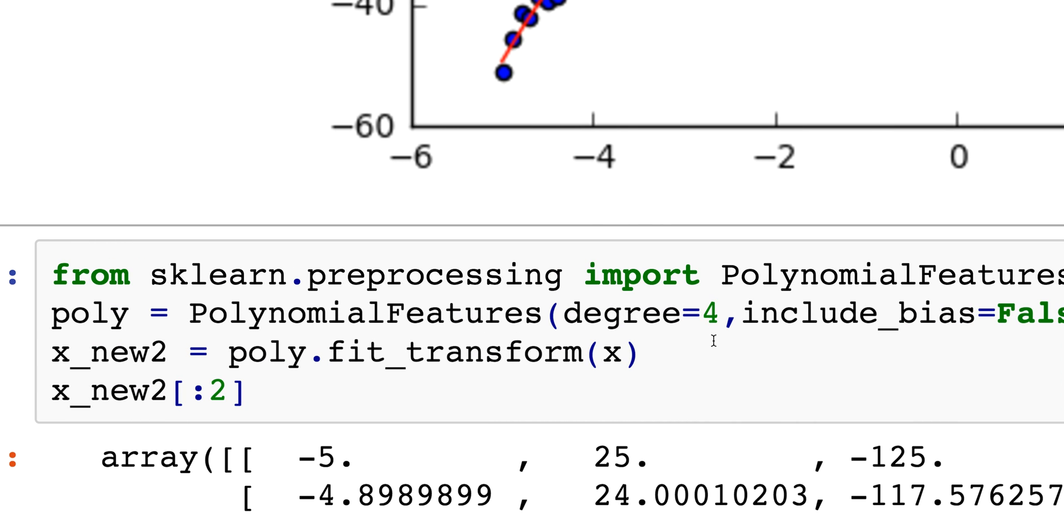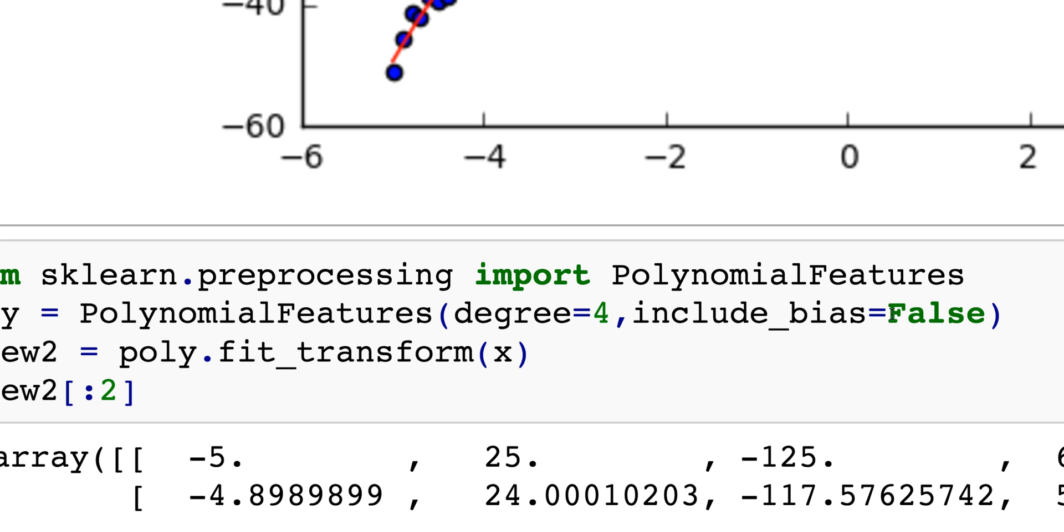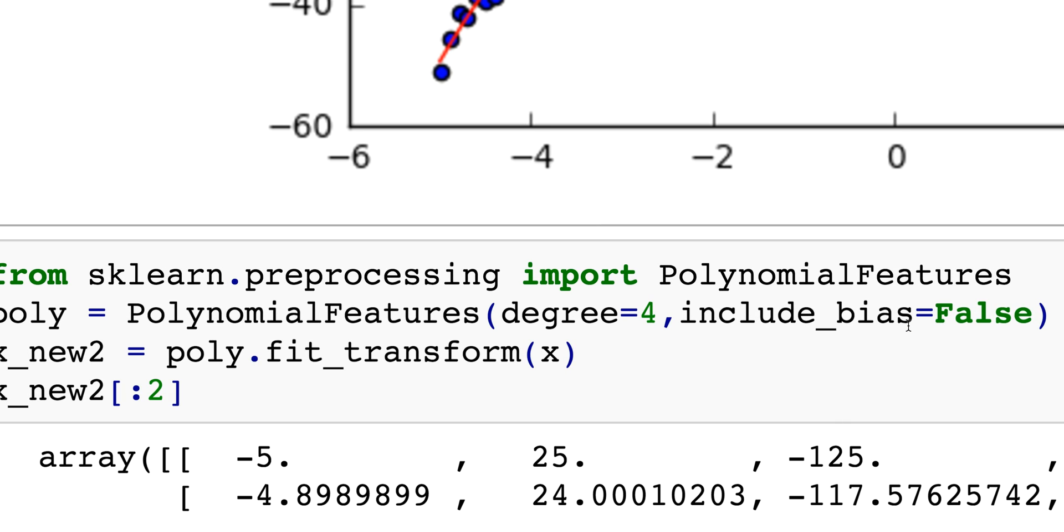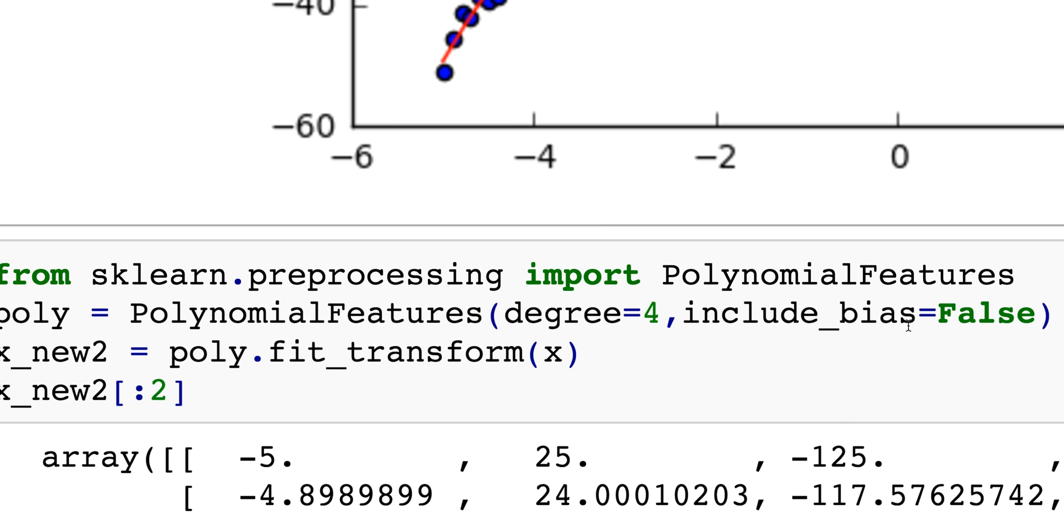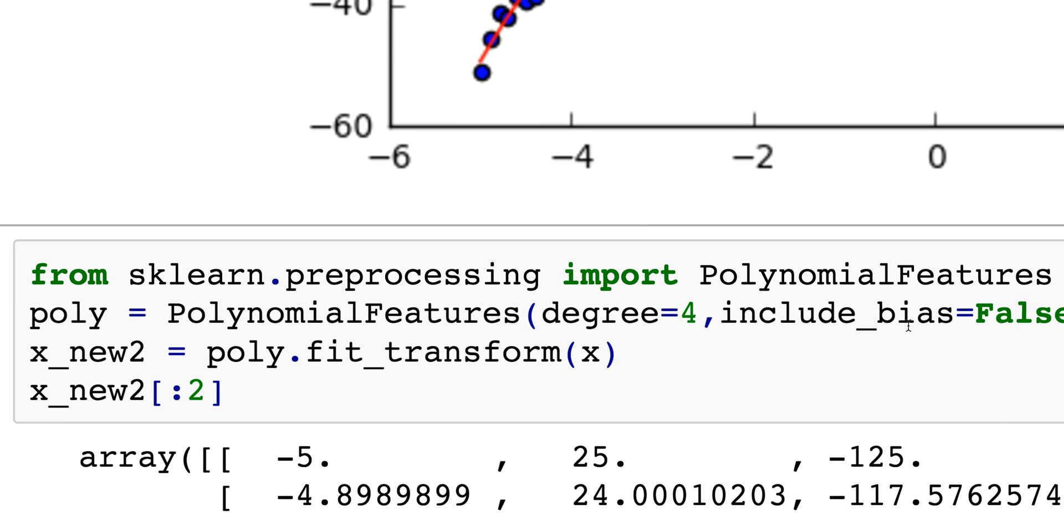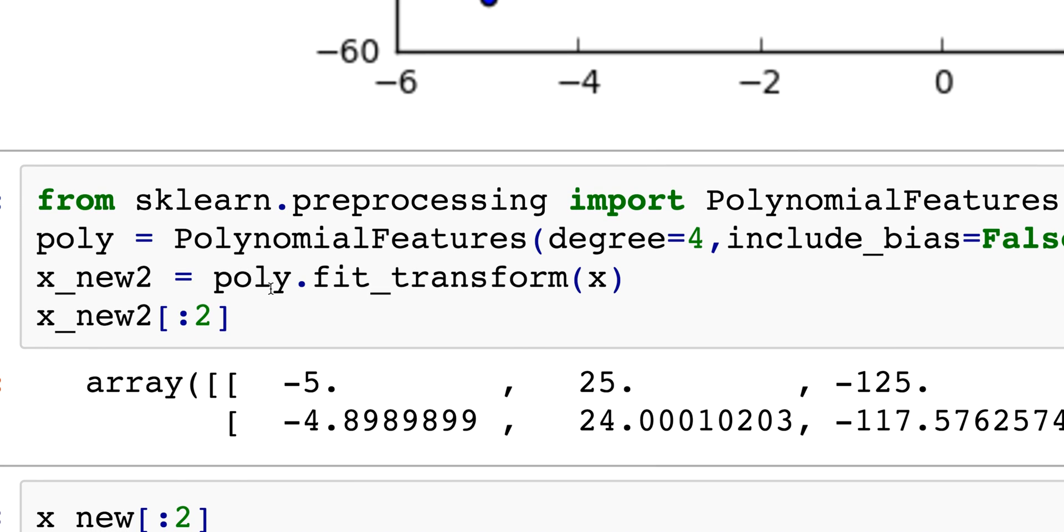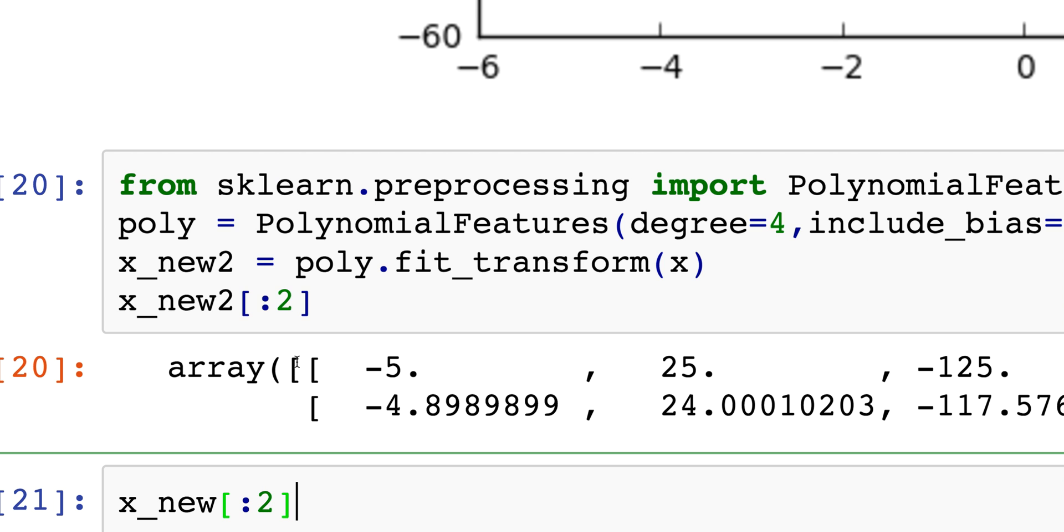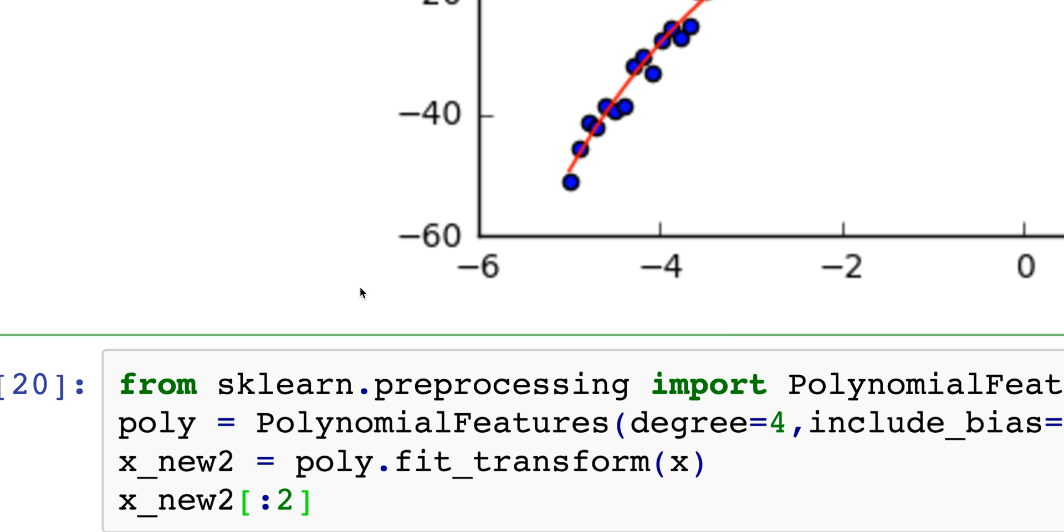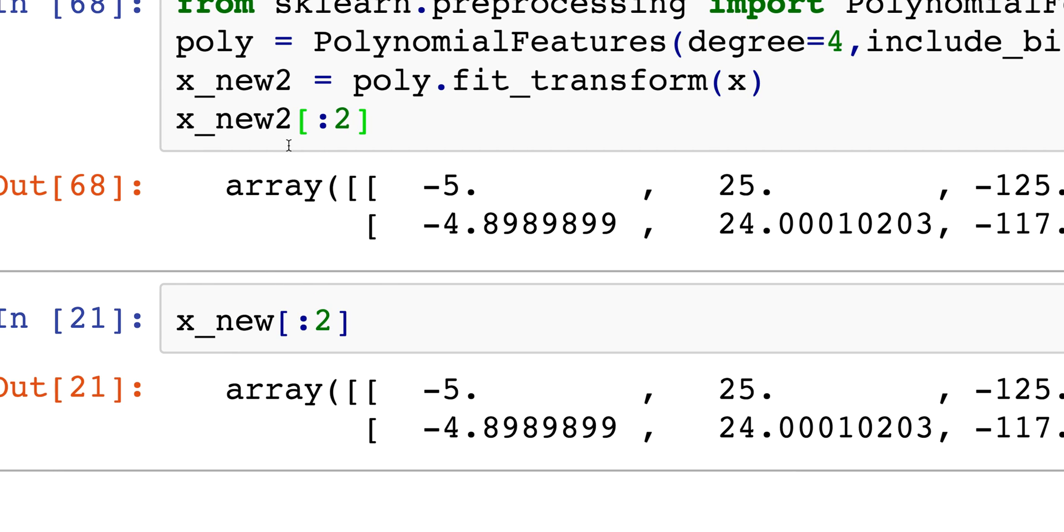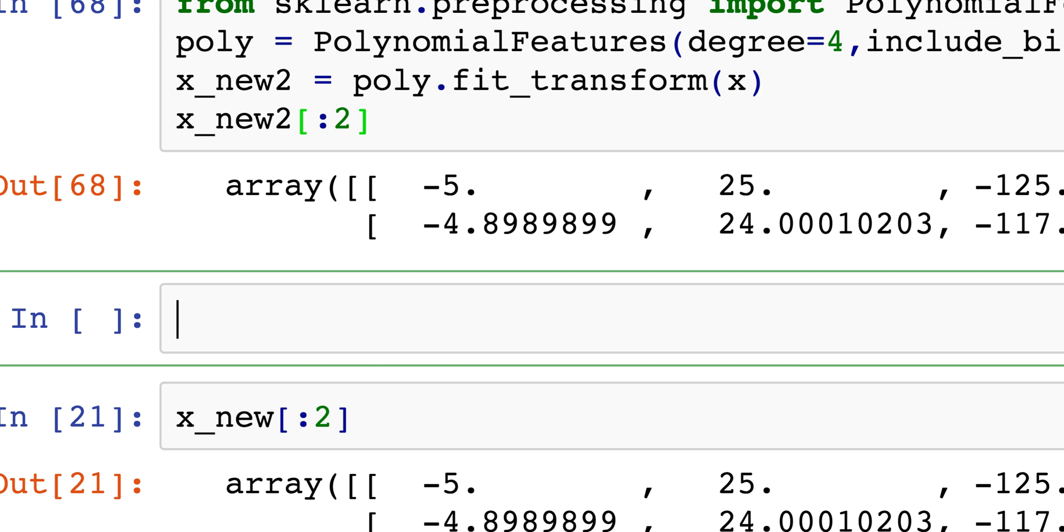Then I'm gonna say the degree is 4, and that's the power of x you want to take it up to. I said include_bias is false. Now bias just puts a set of values of 1 in front, and the reason is that's kind of avoiding the need to do the intercept. I'll probably go through that in the next tutorial so leave that for now. What I'm going to do is poly.fit_transform x.